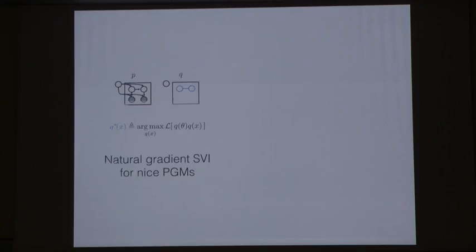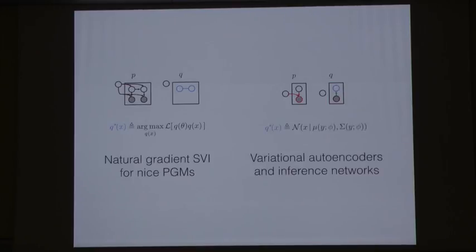In particular, I'm going to talk about natural gradient SVI for nice probabilistic graphical models. And I'm going to talk about variational autoencoders and inference networks. There's a lot of work behind both of these ideas now. I'm just going to highlight the high-level bits.